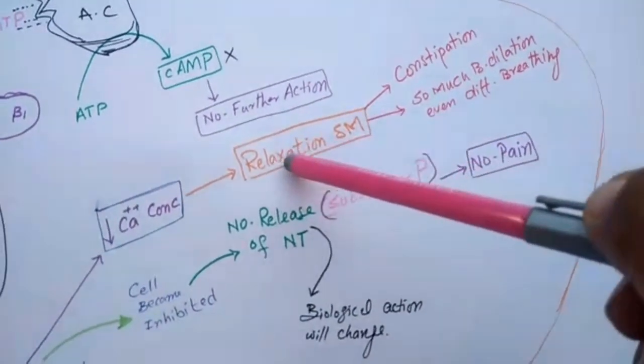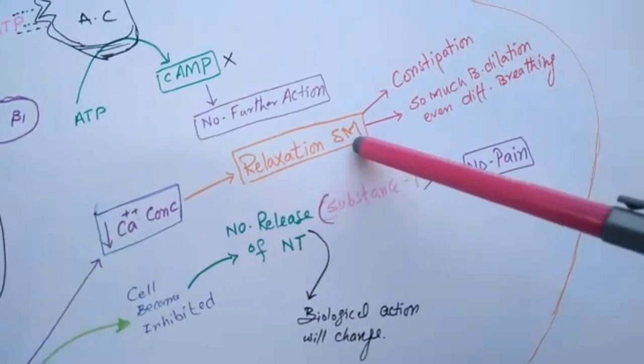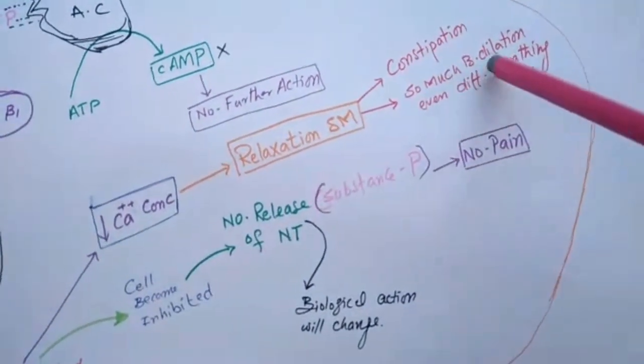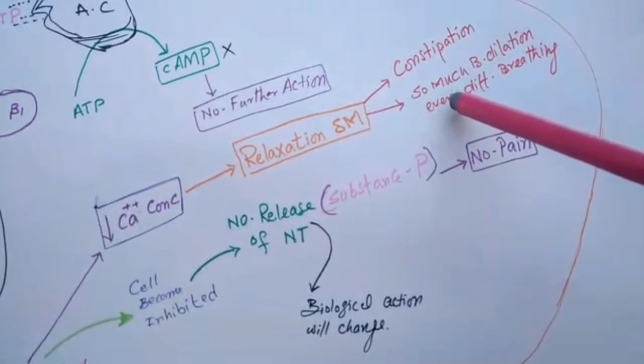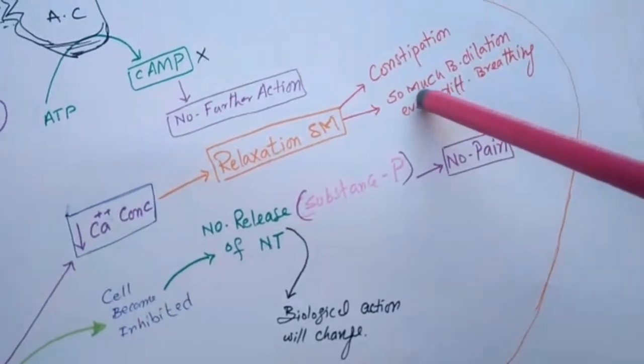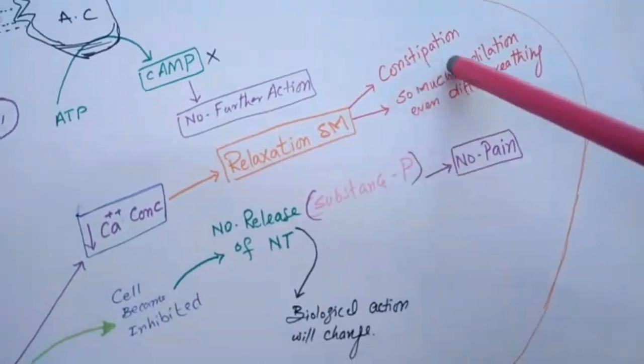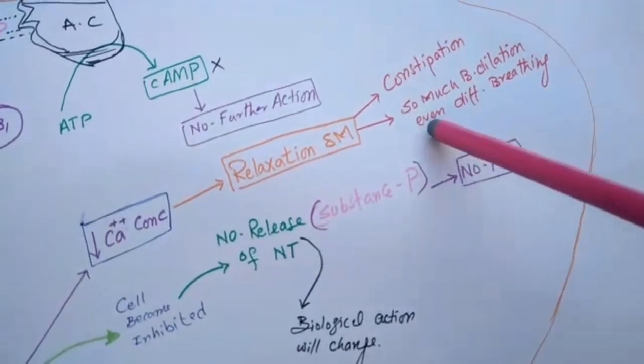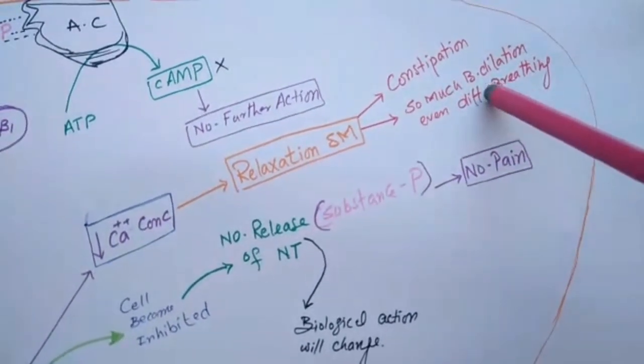And when the smooth muscle of the lungs is relaxed, it will produce so much bronchodilation, and even there will be difficulty in breathing. So this is one of the side effects of morphine—the patient cannot easily take respiration.